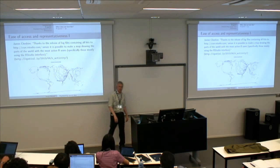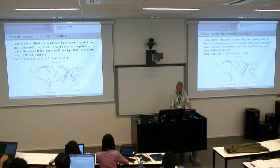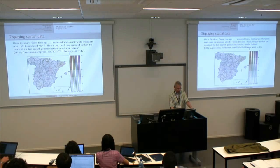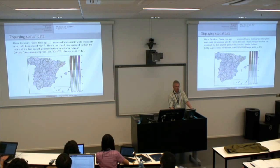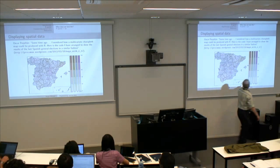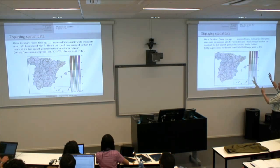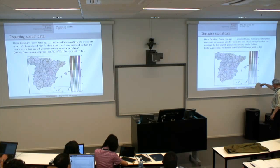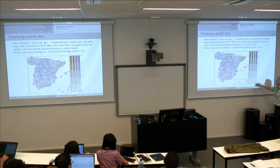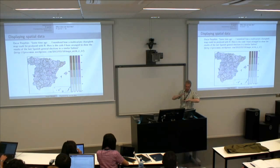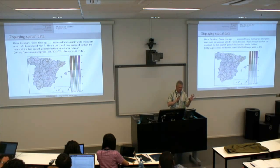Oscar is also participating in the discussion and has a book out with really nice thematic cartography. He has a multivariate choropleth map where the different parties in the last Spanish general election before 2012 are shown with their relative densities, all overlaid with varying amounts of transparency so you see mixtures of colours. It's perhaps not the easiest map to read, but that was the map he wanted to make, so he made it.